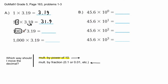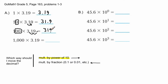For 3.19 × 100, there are two zeros, meaning two powers of ten, so I move the decimal two spaces to the right. Starting from between the 3 and 1, I move it two places, giving 319. with the decimal point after the 9.